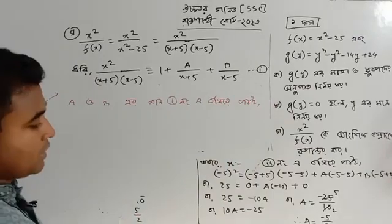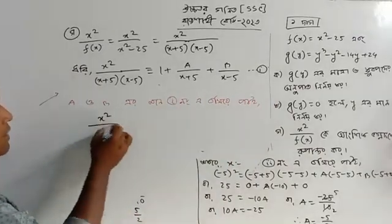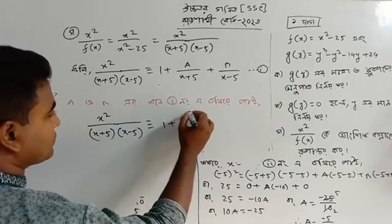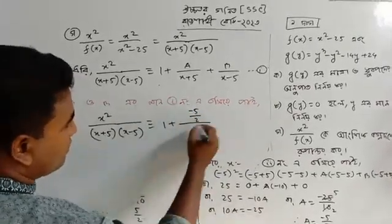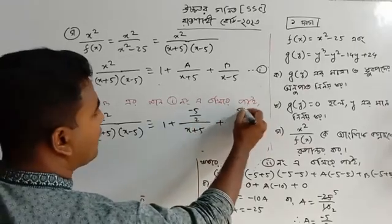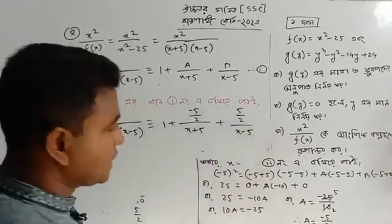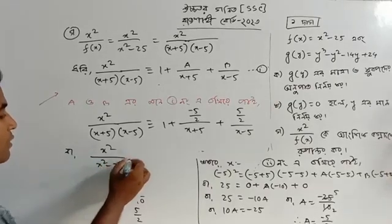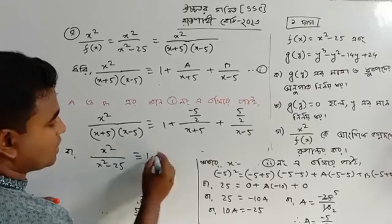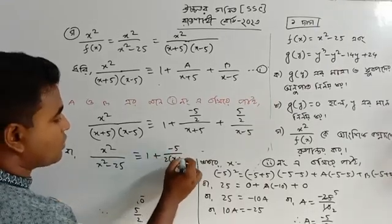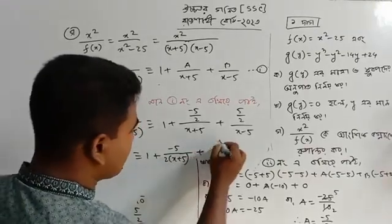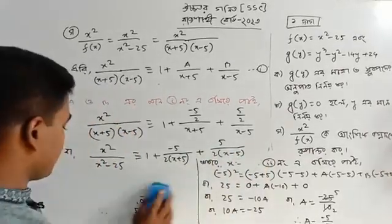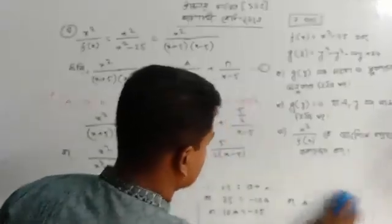So A is minus 5 by 2 and B is 5 by 2. Therefore the final answer is: minus 5 by 2 into x plus 5, plus 5 by 2 into x minus 5.